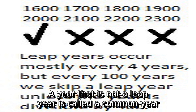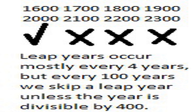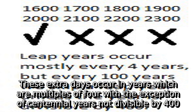A year that is not a leap year is called a common year. For example, in the Gregorian calendar, each leap year has 366 days instead of 365, by extending February to 29 days rather than the common 28. These extra days occur in years which are multiples of 4, with the exception of centennial years not divisible by 400.